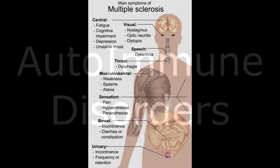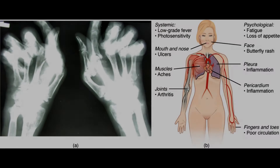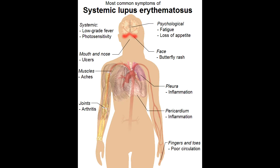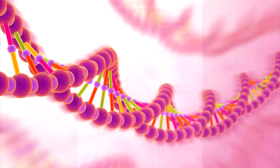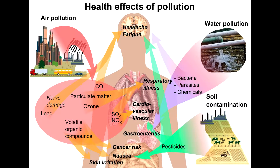Autoimmune disorders such as multiple sclerosis, rheumatoid arthritis, and psoriasis are caused by multiple factors including genetic susceptibility to environmental toxins. One emerging model of the pathogenesis of autoimmune disease is as follows.